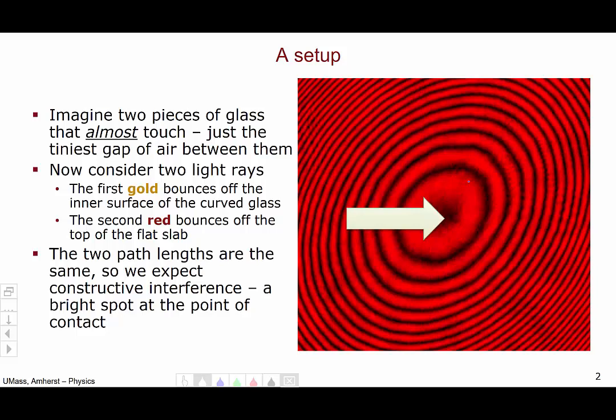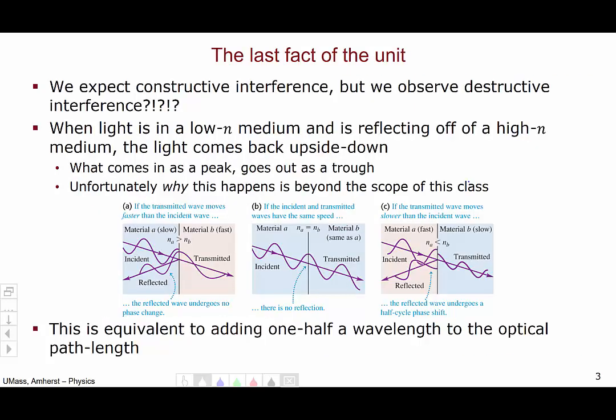The key part you need is we actually get destructive interference at this point where the two pieces of glass touch, which is not what we would expect given that their two path lengths are the same. So why is this going on? We expect constructive interference, but we observe destructive interference.